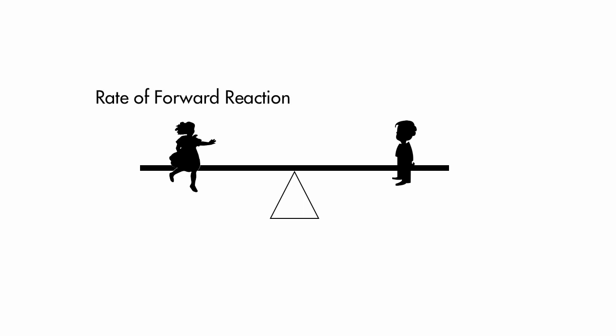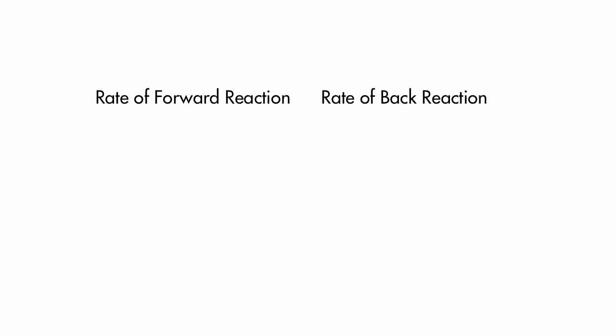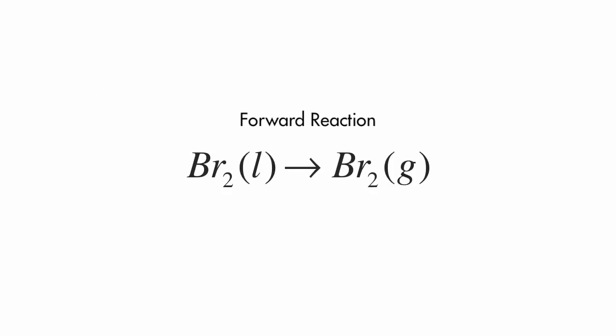In this analogy, the balanced kids represent the rates of forward and backward reactions. But what are forward and backward reactions? That's simple. A forward reaction is any reaction going left to right when you write it down. For example, the process of bromine boiling or evaporating.